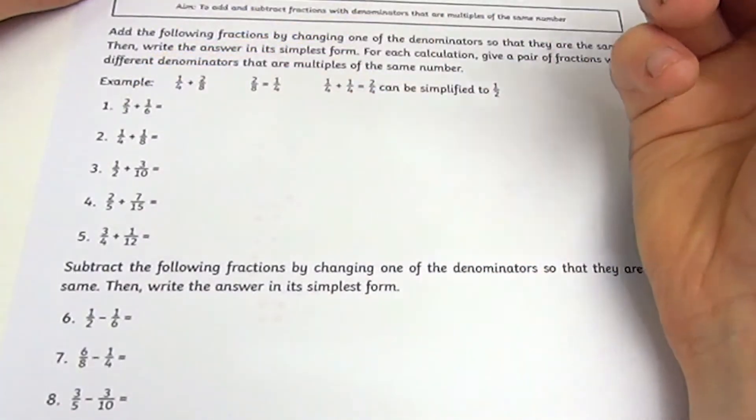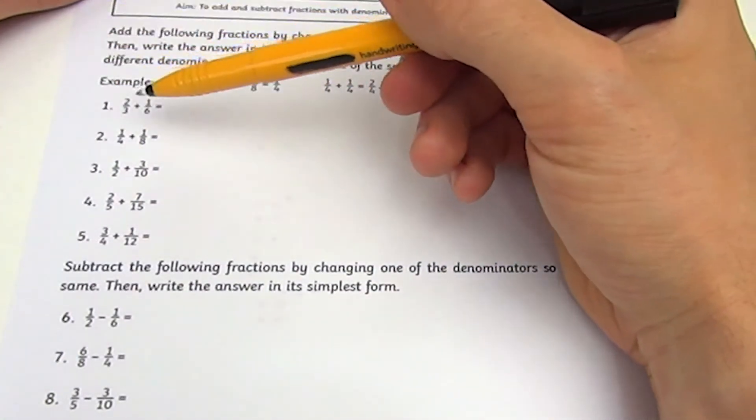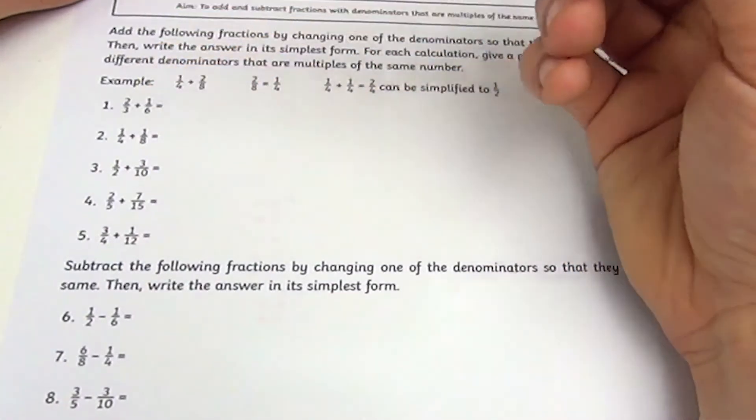add 1/6. To add these two together, we're going to see if we can make the denominators the same. Because this denominator 3 is a factor of 6, we're going to aim for both of these fractions to have